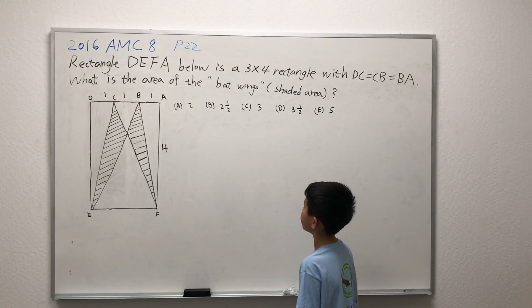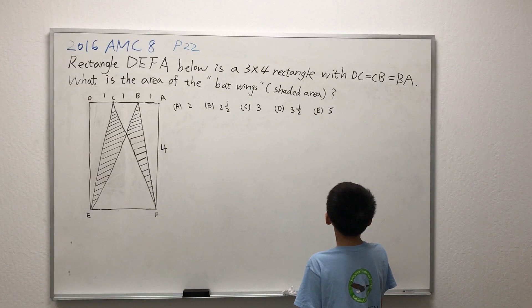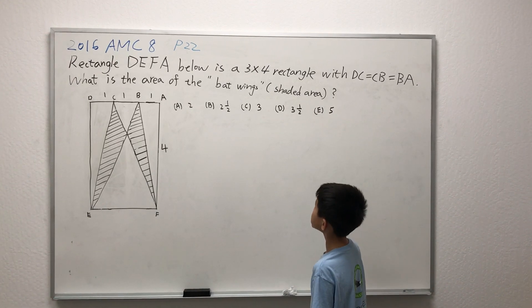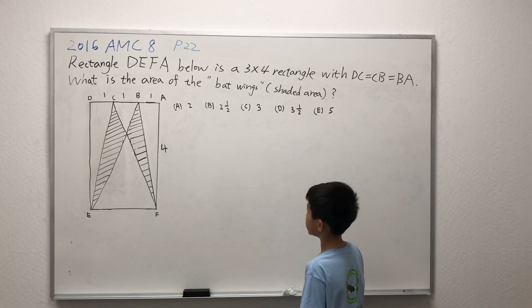Rectangle DEFA below is a 3x4 rectangle with DC equals CB equals BA. What is the area of the bat wings, the shaded area?